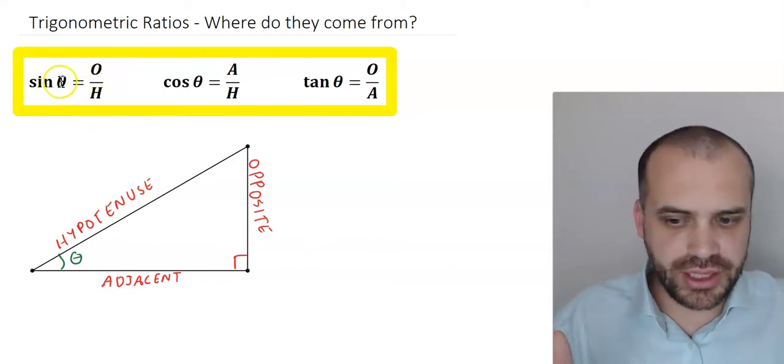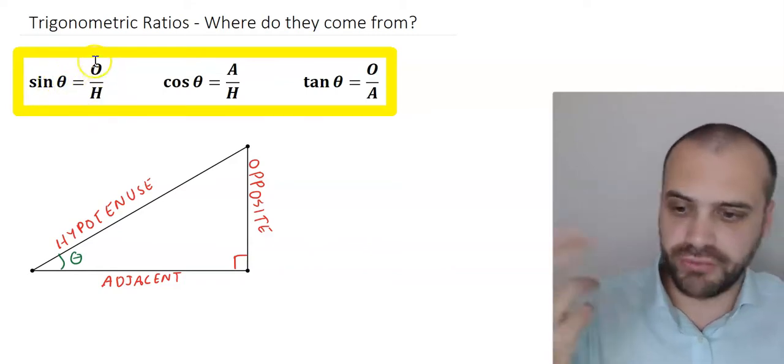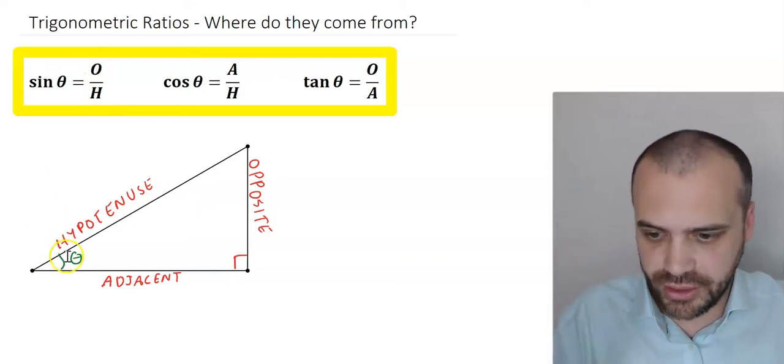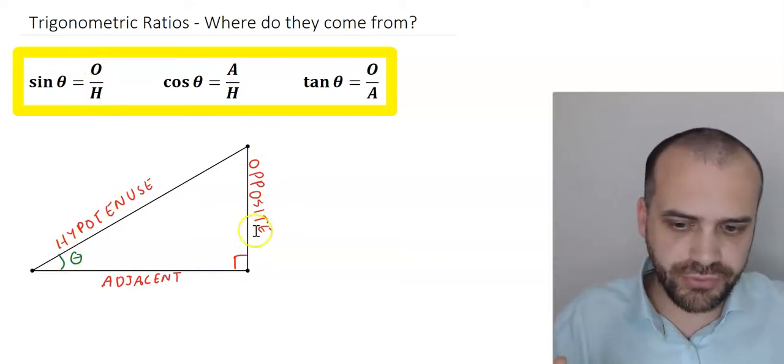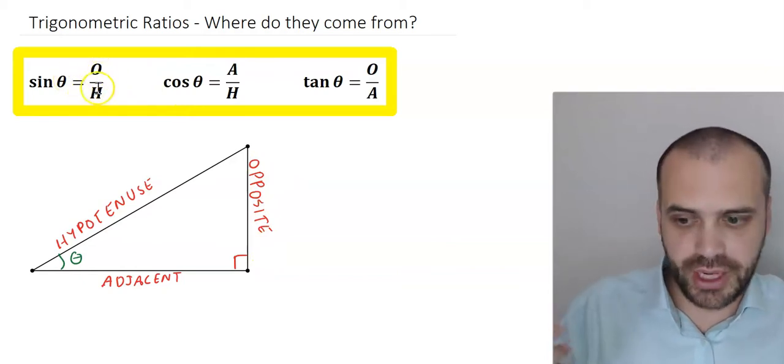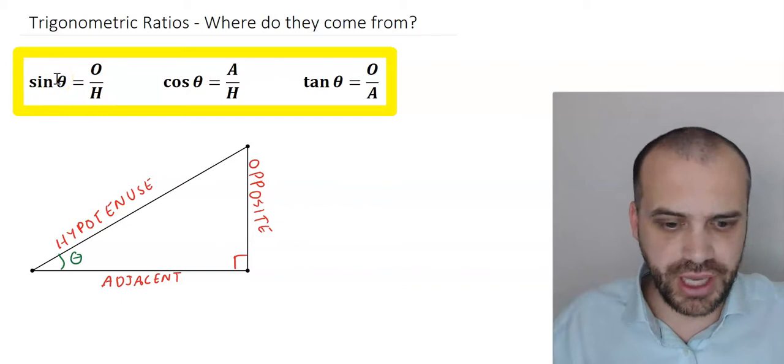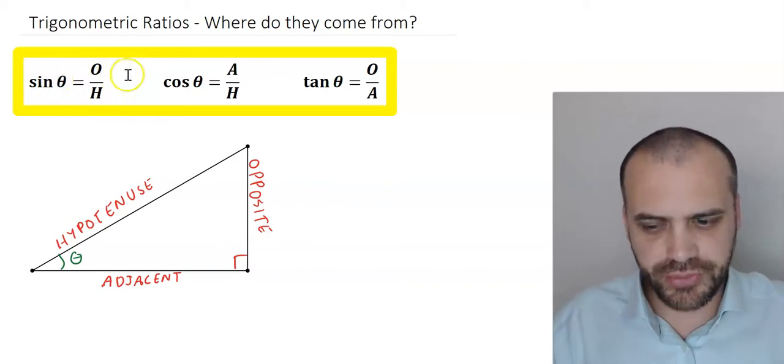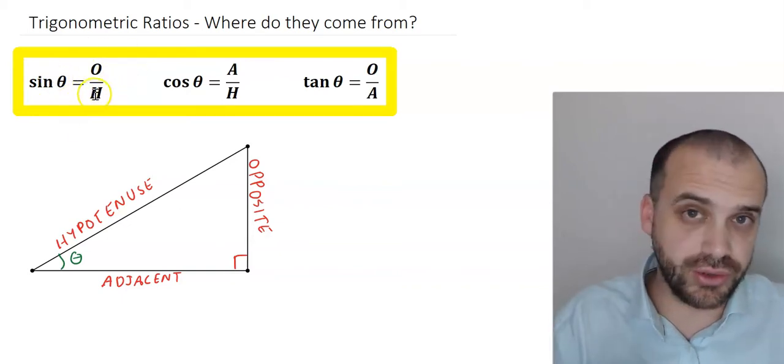If I know theta and hypotenuse I can find the opposite. If I know the angle and the hypotenuse I can find the length of this side. If I know opposite and hypotenuse I can find the size of the angle. As long as I know two of the things in that formula I can find the third thing.